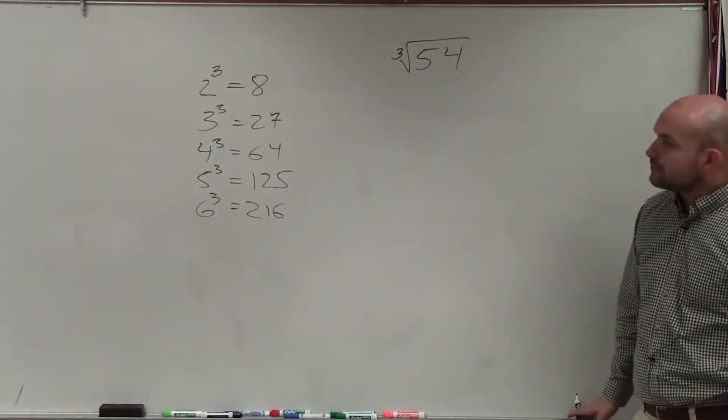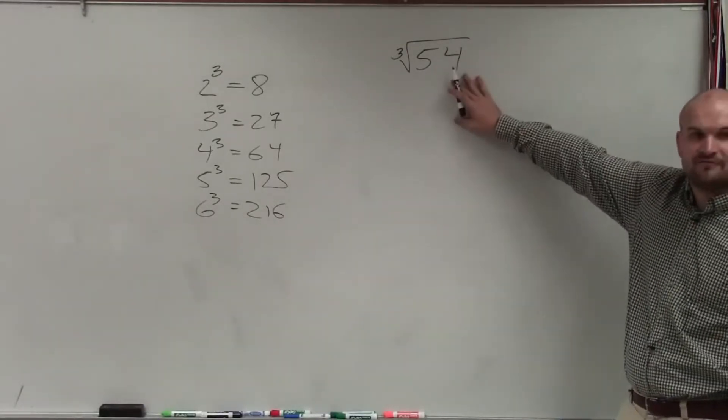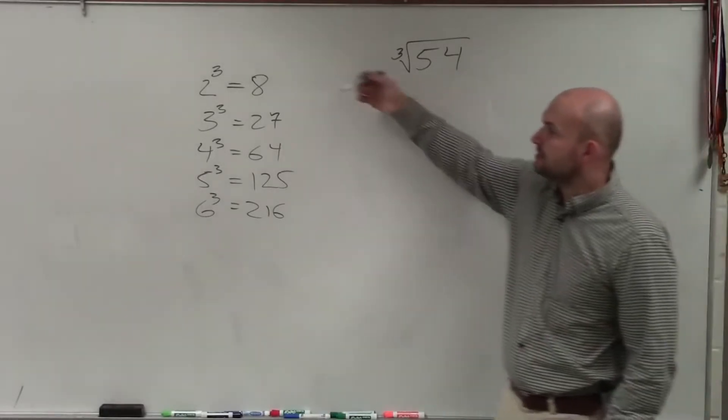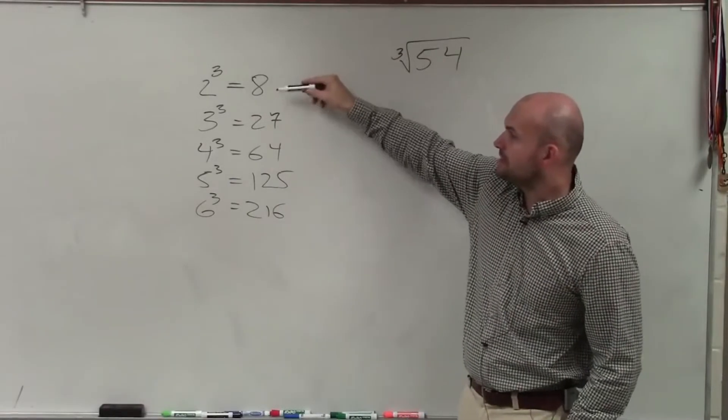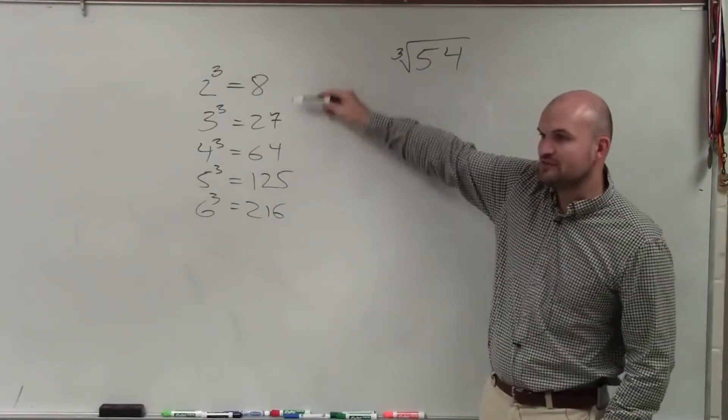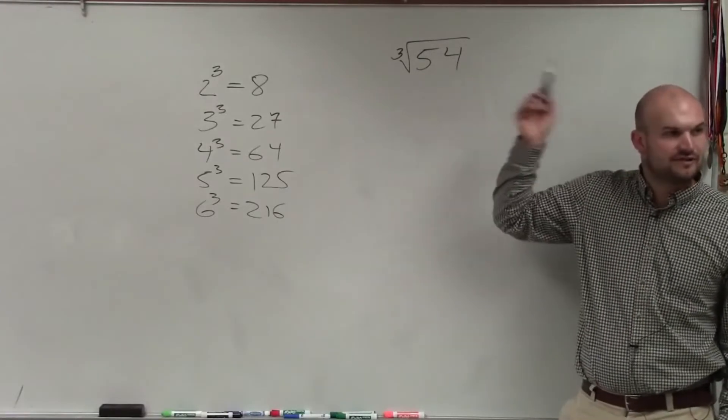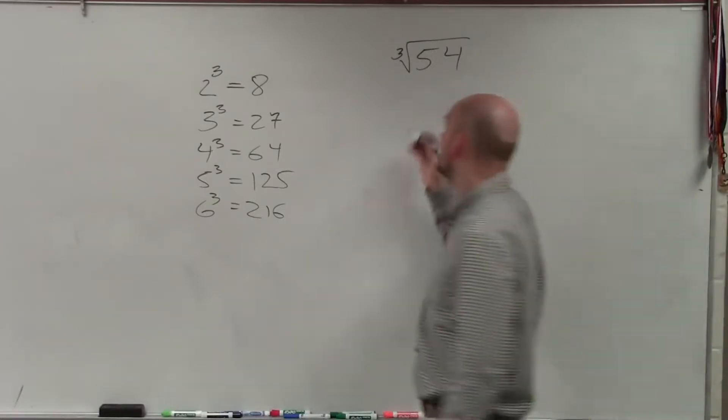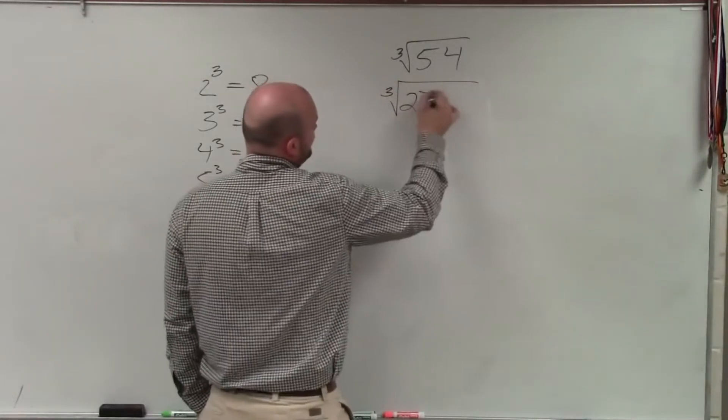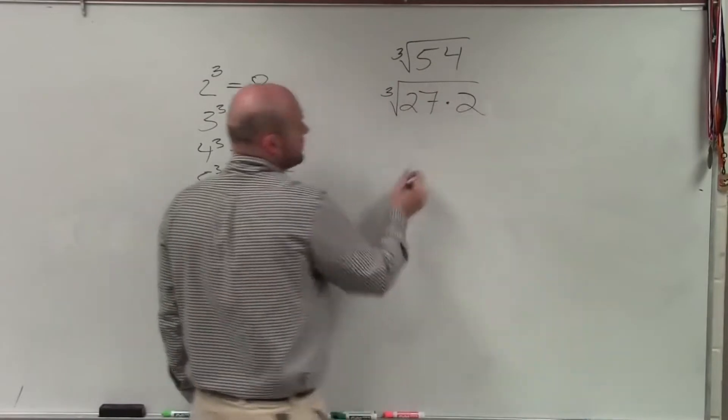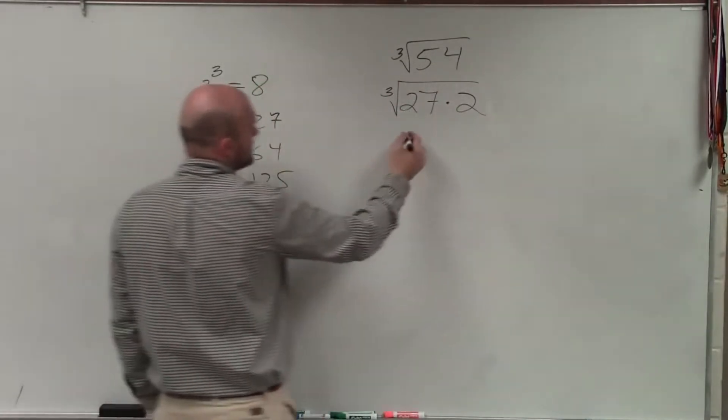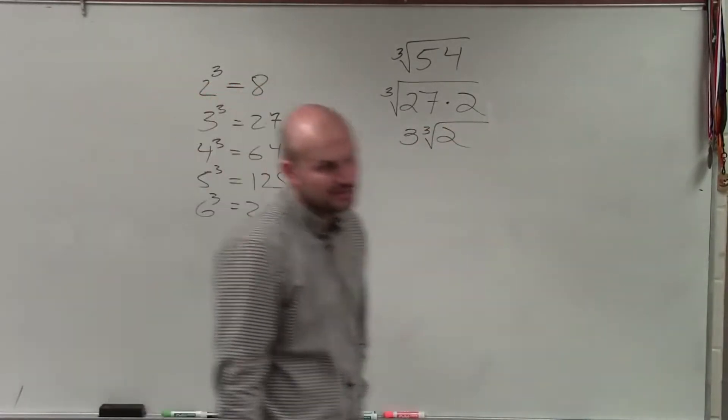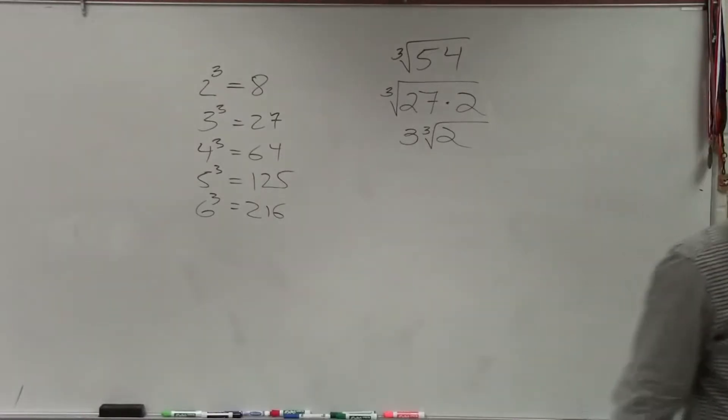So when I'm looking for this, if I want to simplify cube root, yes, we could prime factor 54. There's not a problem with doing that. However, I always think it's simpler or easier to be able to determine which of these numbers divide into 54. Yeah, 27, and it goes in there twice. So what I can do is rewrite this as the cube root of 27 times 2. Now I know the cube root of 27, that's 3, times the cube root of 2. And I can't simplify the cube root of 2, so that's just going to remain as 2.